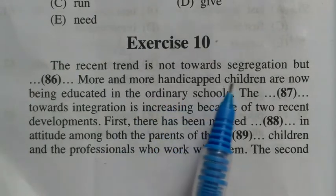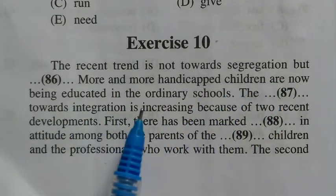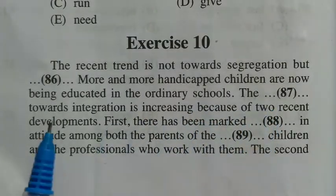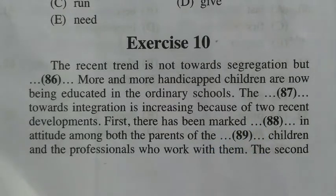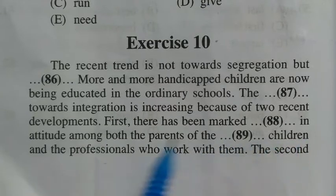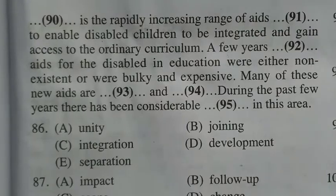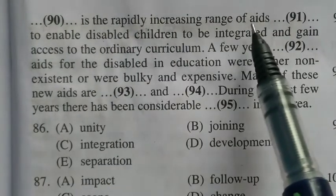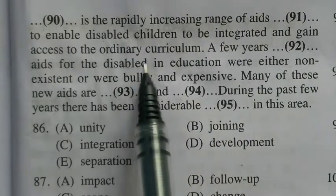Exercise ten paragraph: 'The recent trend is not towards segregation but dash. More and more handicapped children are now being educated in the ordinary schools. The dash towards integration is increasing because of two recent developments. First, there has been a marked dash in attitude among both the parents of the dash children and the professionals who work with them. The second dash is the rapidly increasing range of aids dash to enable disabled children to be integrated and gain access to the ordinary curriculum.'